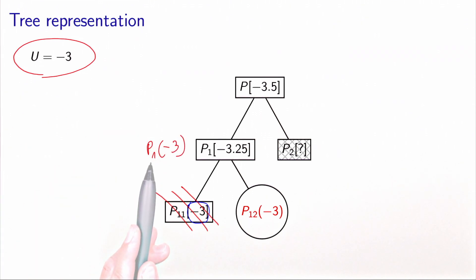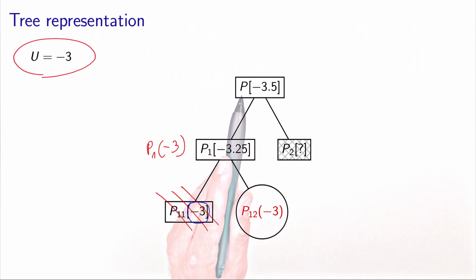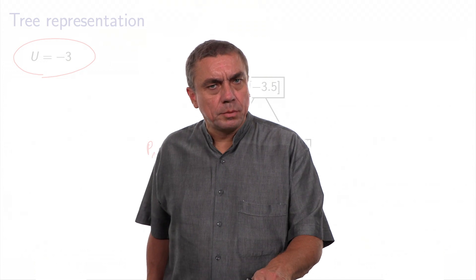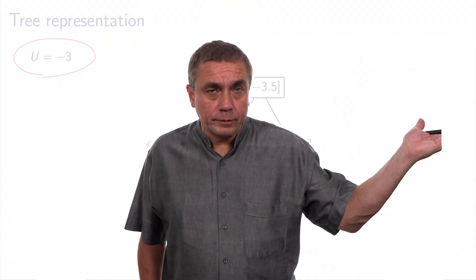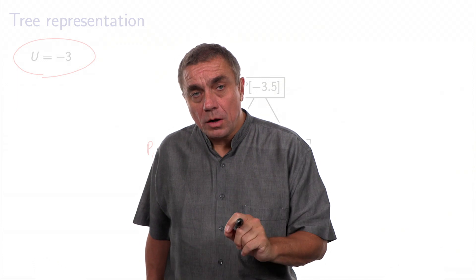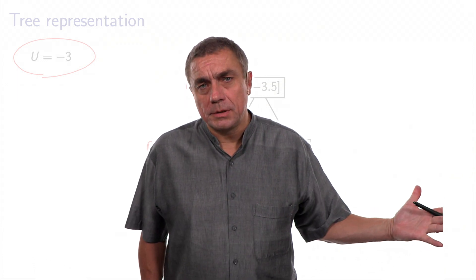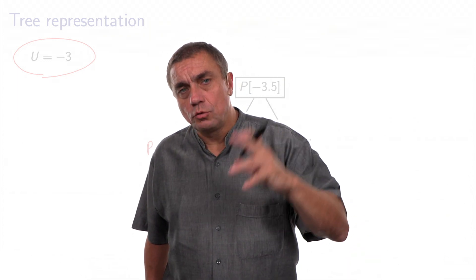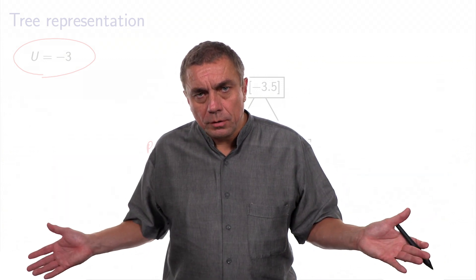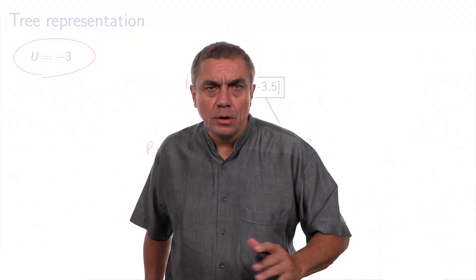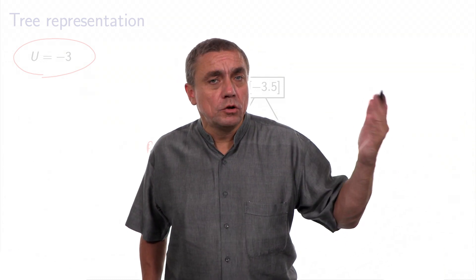Now we are done, because P1 has the same set of feasible solutions and the same objective function as P — so we have found the solution for the original problem. This problem is very simple and does not illustrate the full power of branch and bound, but it shows we could solve it without solving all generated subproblems. When problems become larger, more subproblems can be eliminated using this technique, avoiding enumeration of solutions that would be inferior.